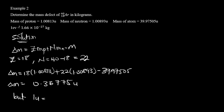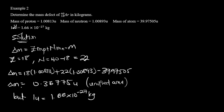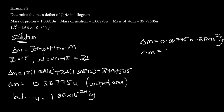To convert to kilograms, we use 1 u = 1.66 × 10⁻²⁷ kg. So the mass defect = 0.36775 × 1.66 × 10⁻²⁷ kg = 6.10465 × 10⁻²⁸ kg. This is the mass defect for argon.